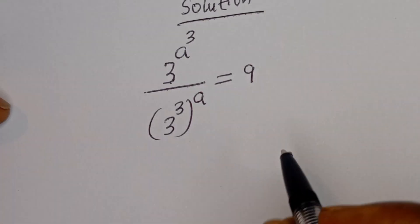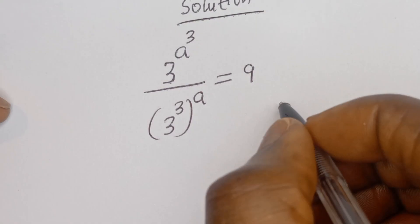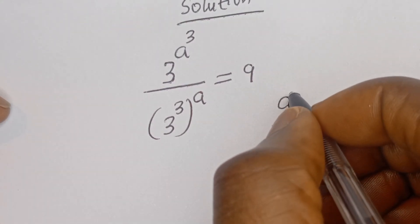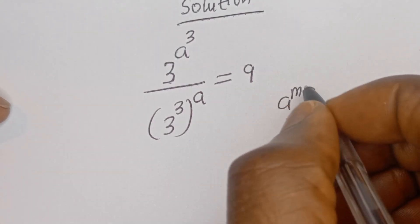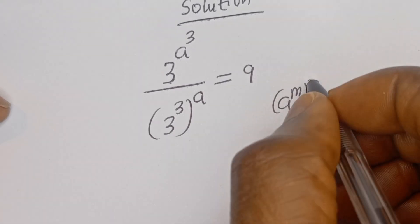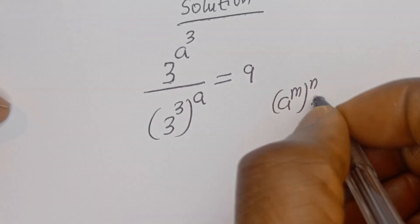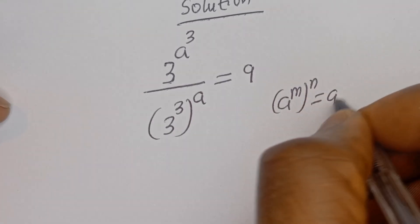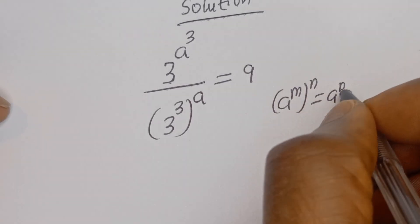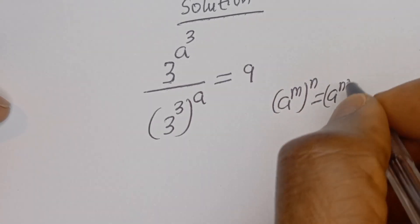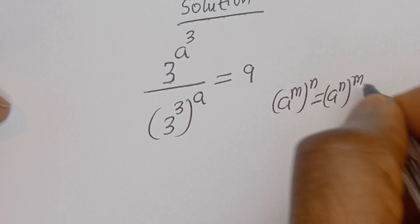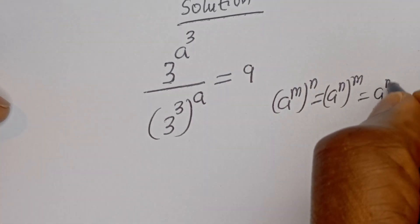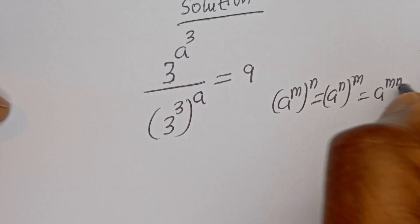Take note of this: if you have A to the power of M to the power of N, this is equal to A to the power of N to the power of M, which is equal to A to the power of M times N.